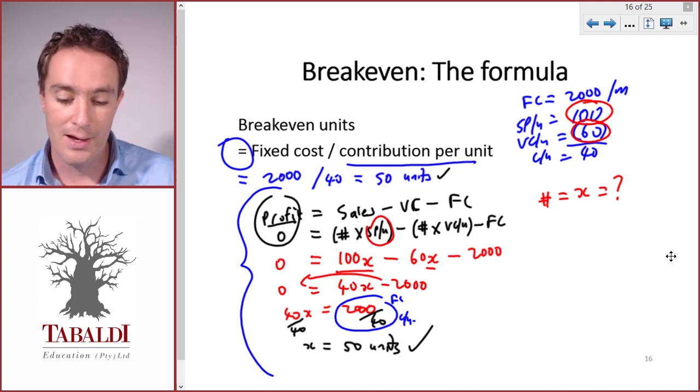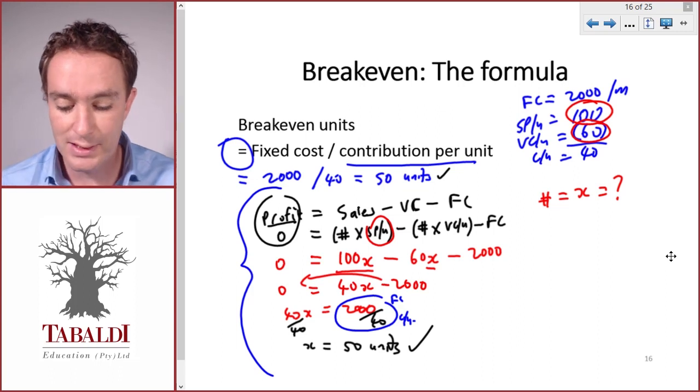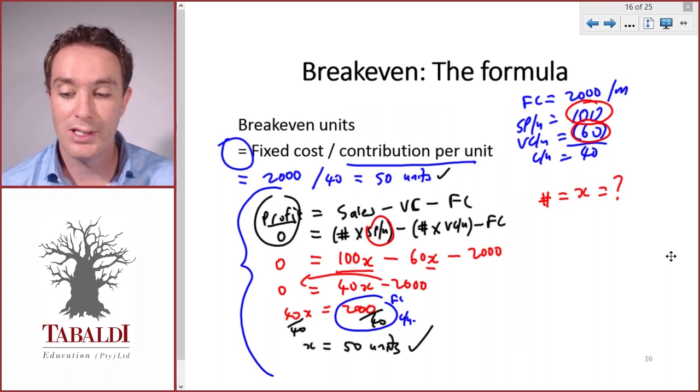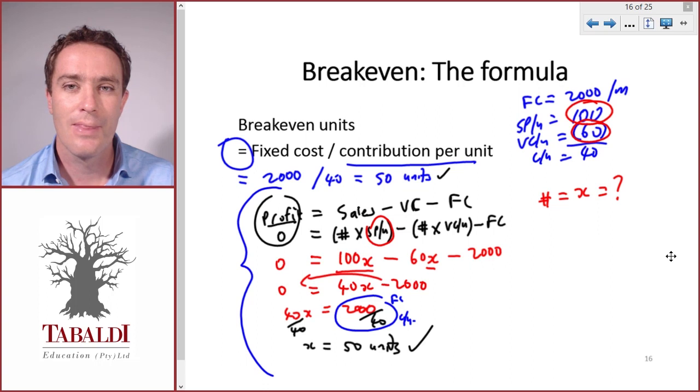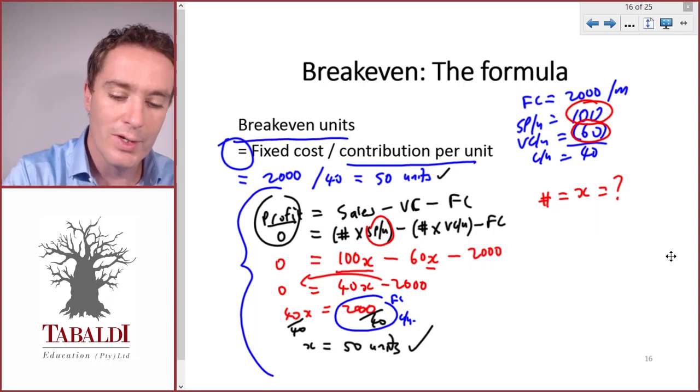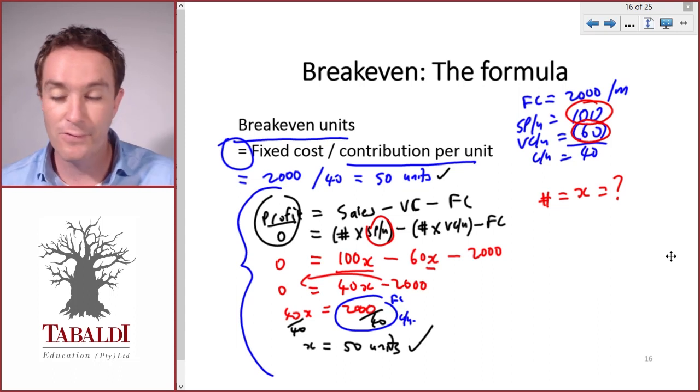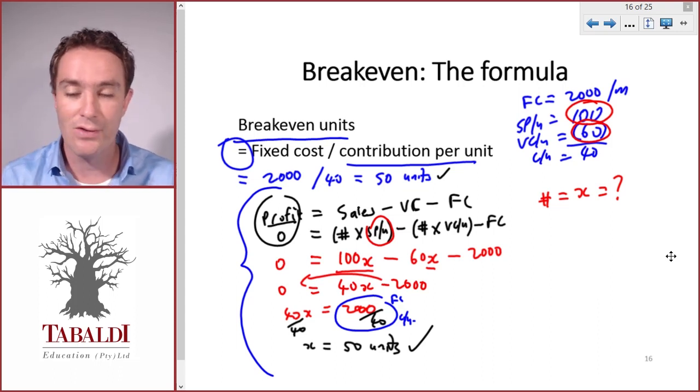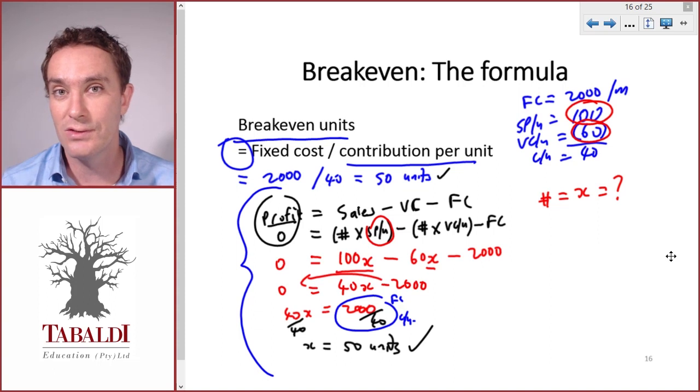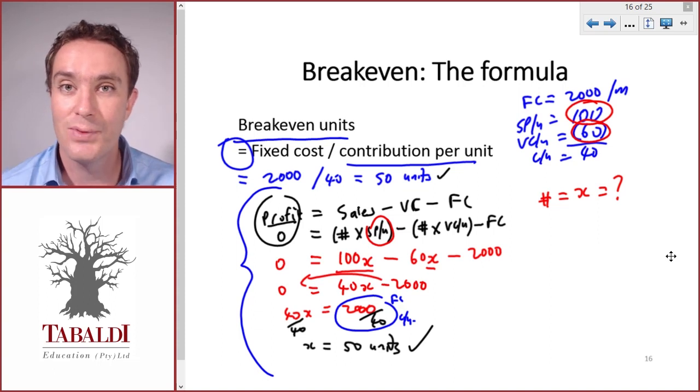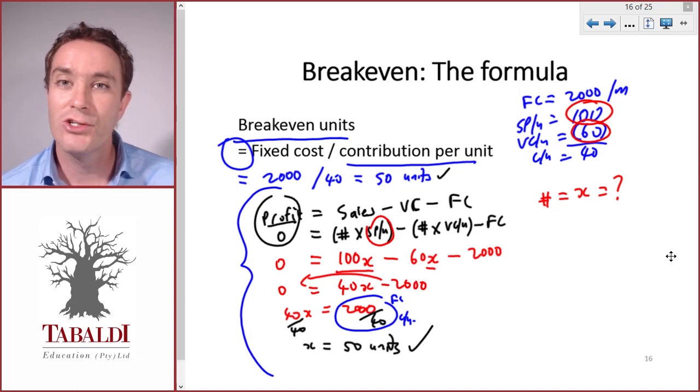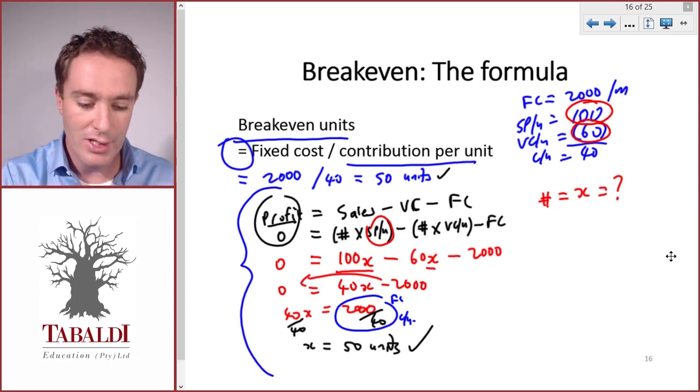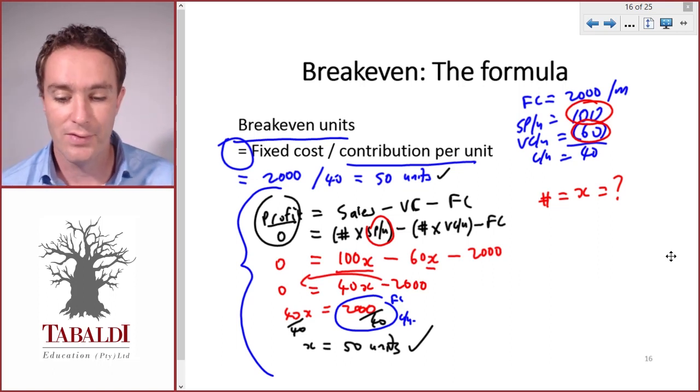What if the question said you are currently selling a certain amount of units and they give you the units but they want to know what should you charge per unit, the breakeven selling price per unit. Then you can't use this breakeven formula or you'll have to change it. The algebra is a foolproof way to calculate any of the variables. They could ask you the number of units to breakeven, the selling price per unit to breakeven, the variable cost per unit to breakeven or even what should our fixed costs be to breakeven. You can use algebra to solve for X or the missing variable.